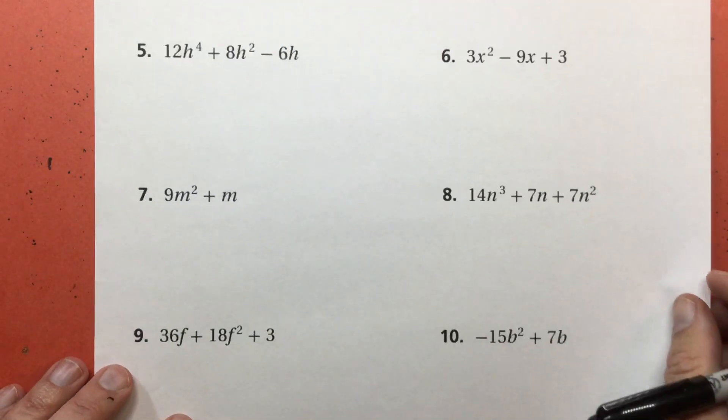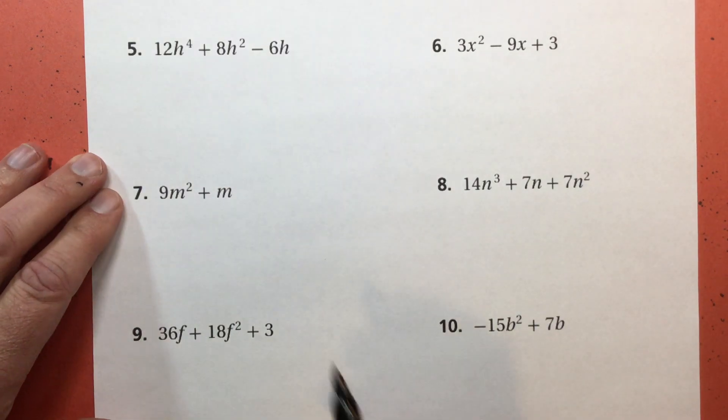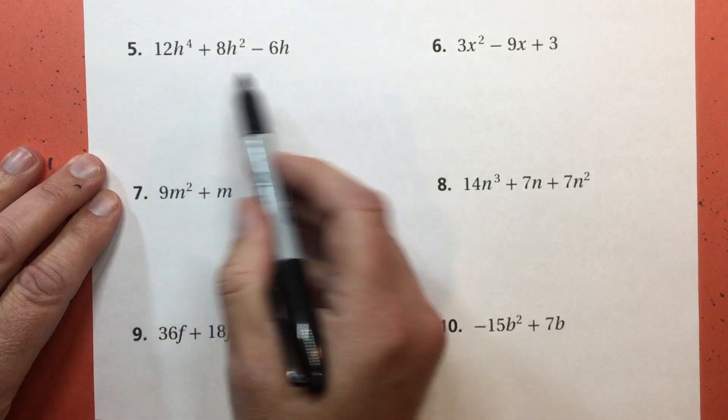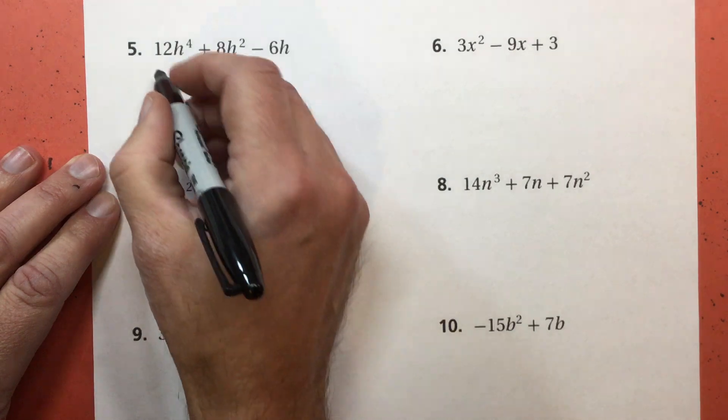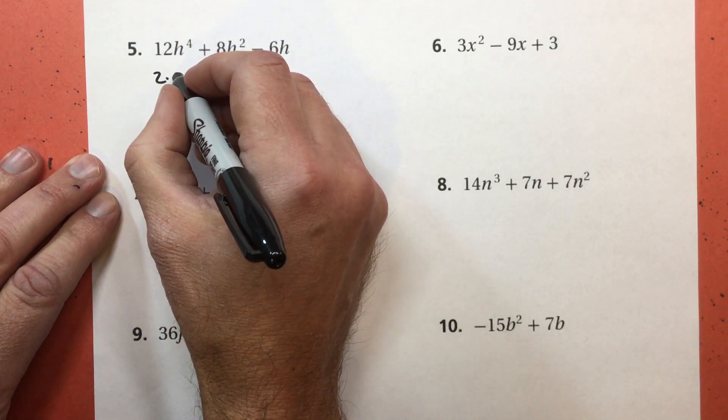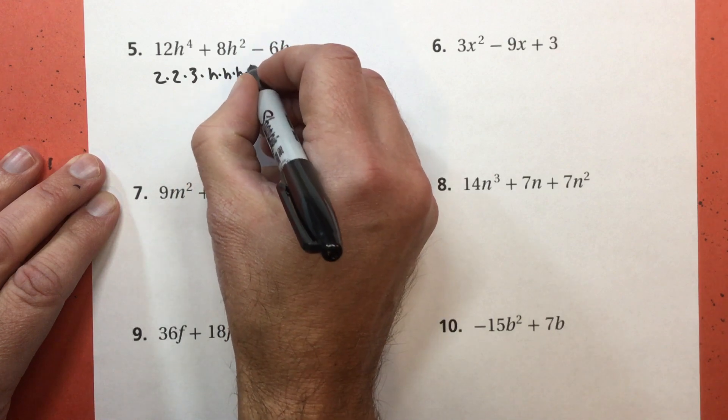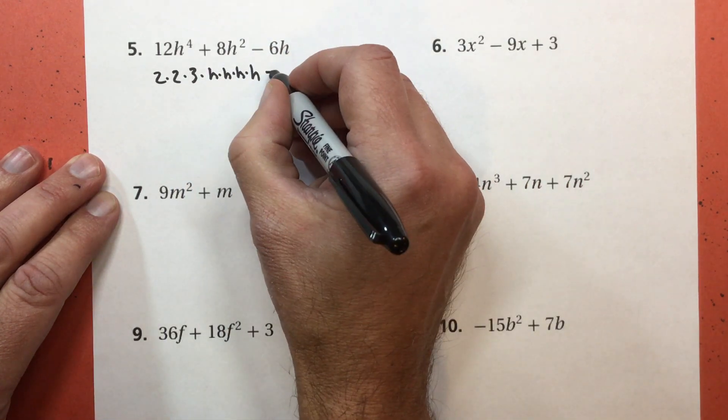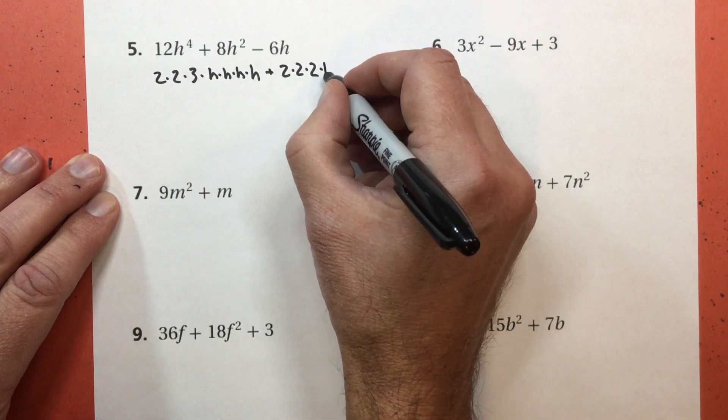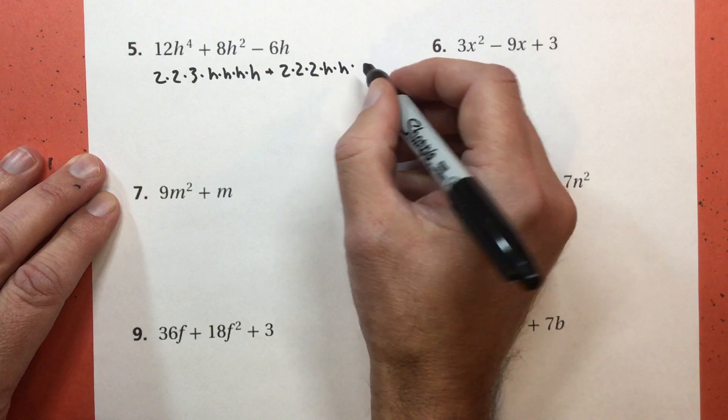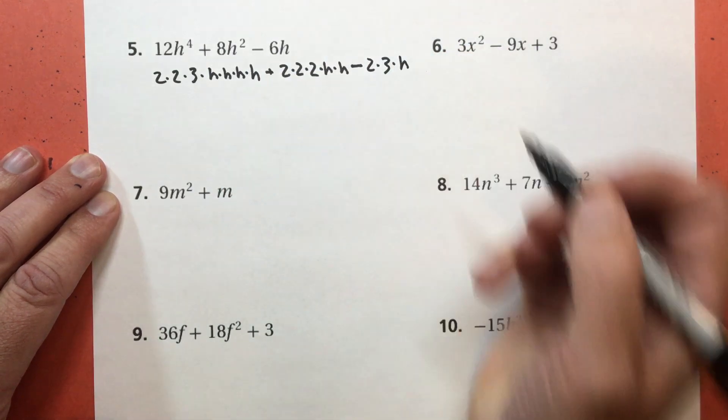And yes, there are a lot in this section. So I will try to go through these relatively quickly. Now I have a trinomial with 3 terms. Whatever the GCF is has to be in all 3 terms. 12 is 2 times 6, which is 2 times 3. And I got 1, 2, 3, 4 H's. 8 is 2 times 4, which is 2 times 2. And I've got H times H. And then 6 is 2 times 3. And I only have 1 H there.